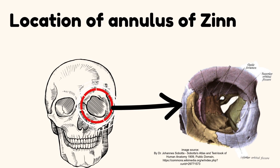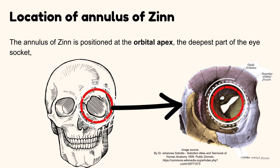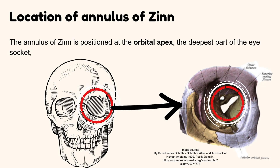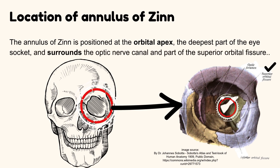Location of the Annulus of Zinn. The Annulus of Zinn is positioned at the orbital apex, which is the deepest part of the eye socket, and surrounds the optic nerve canal and part of the superior orbital fissure.